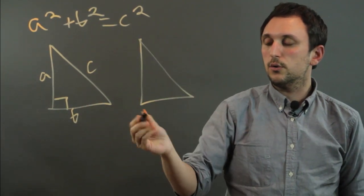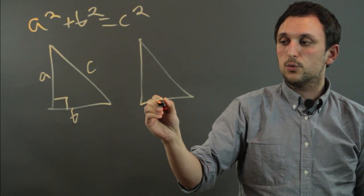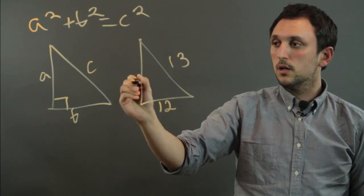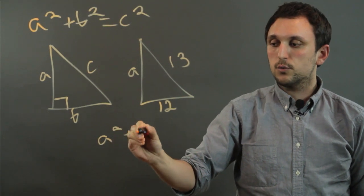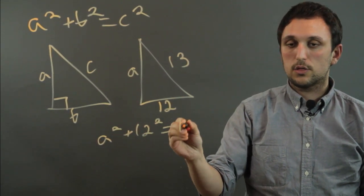So then, if we have a triangle in which we know, say, 12 and 13, but we don't know A, we say A squared plus 12 squared equals 13 squared.